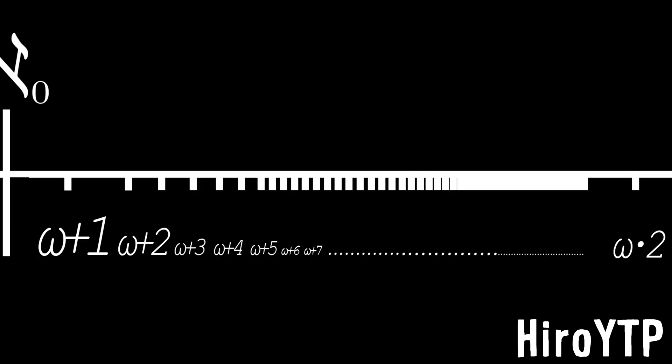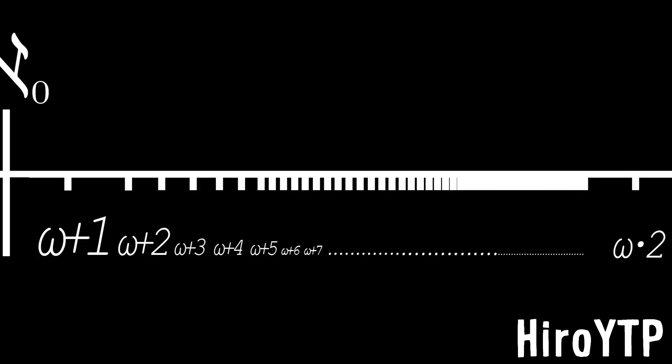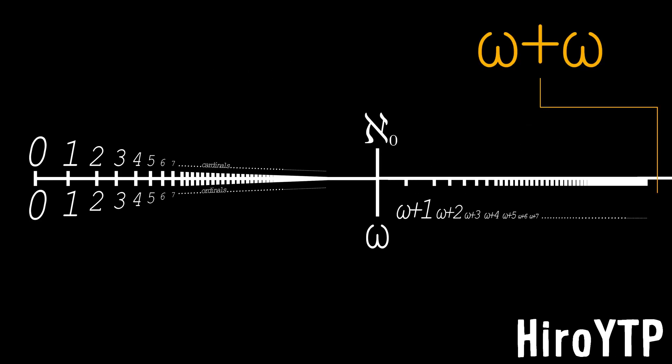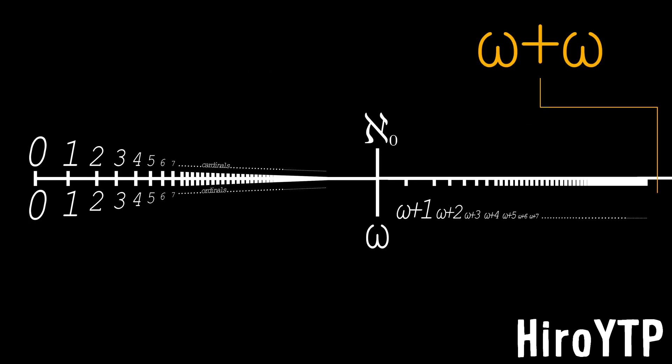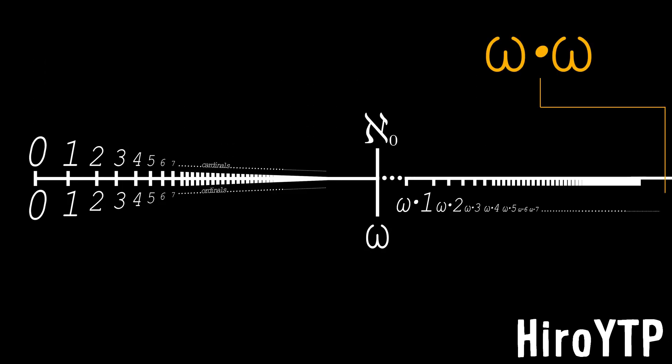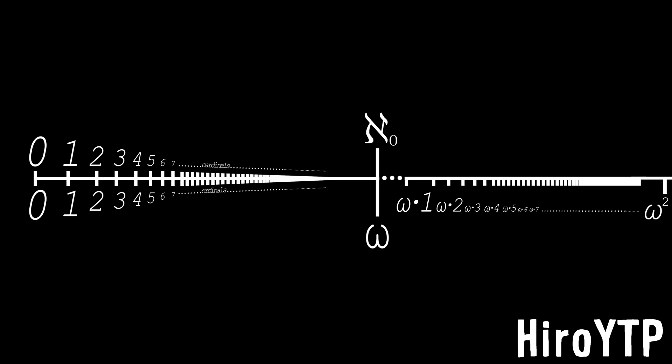In 1908, 1 — omega plus omega, omega plus omega 1, aleph null. Omega, omega, omega plus omega, omega times 2 — omega, omega, omega times omega, omega squared.